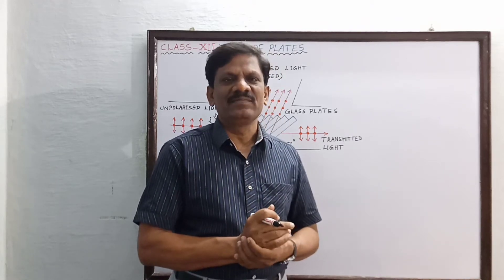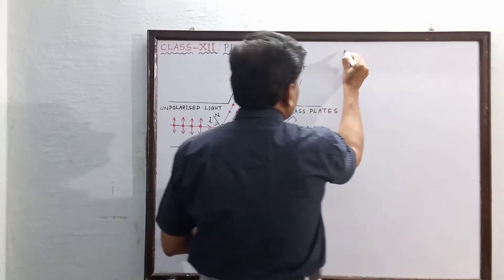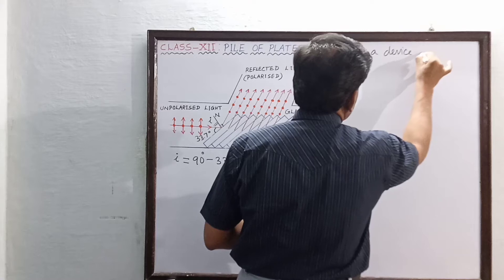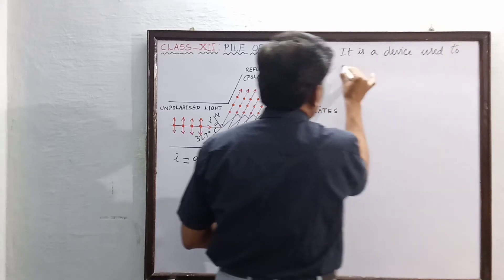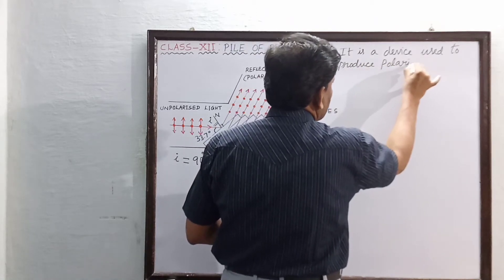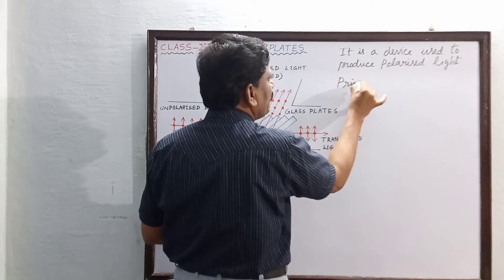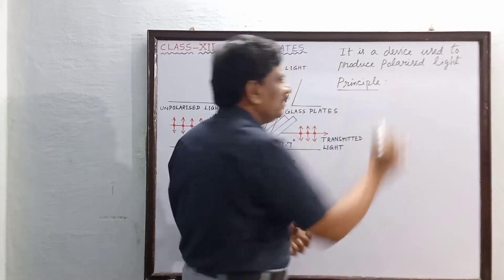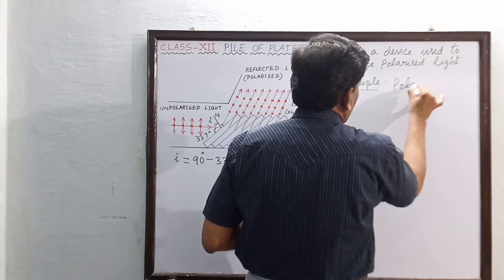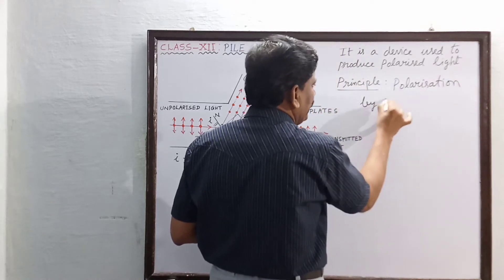At this polarizing angle of 56.3 degrees, when the light is incident, the reflected ray will be completely polarized. So the pile of glass plates is a device which is used to produce polarized light. The principle on which this device works is polarization by reflection.